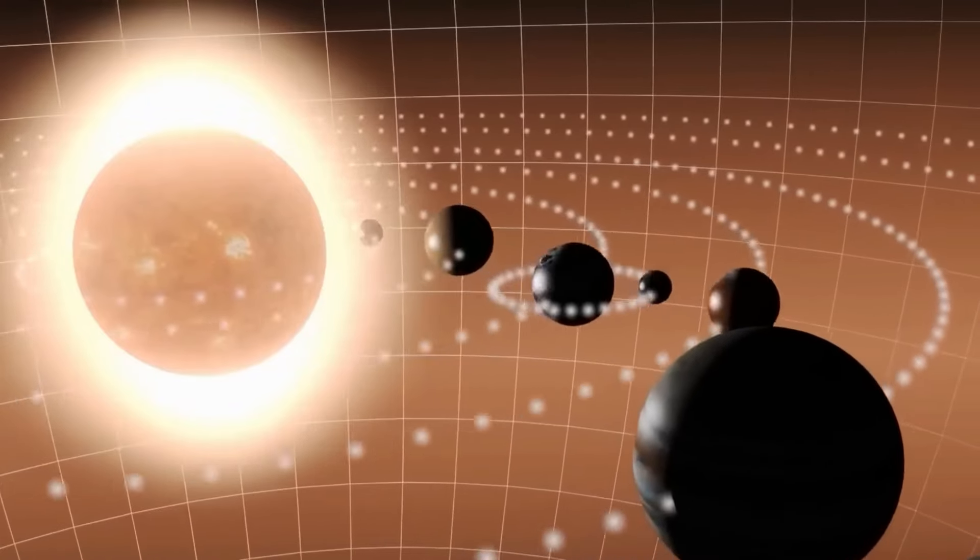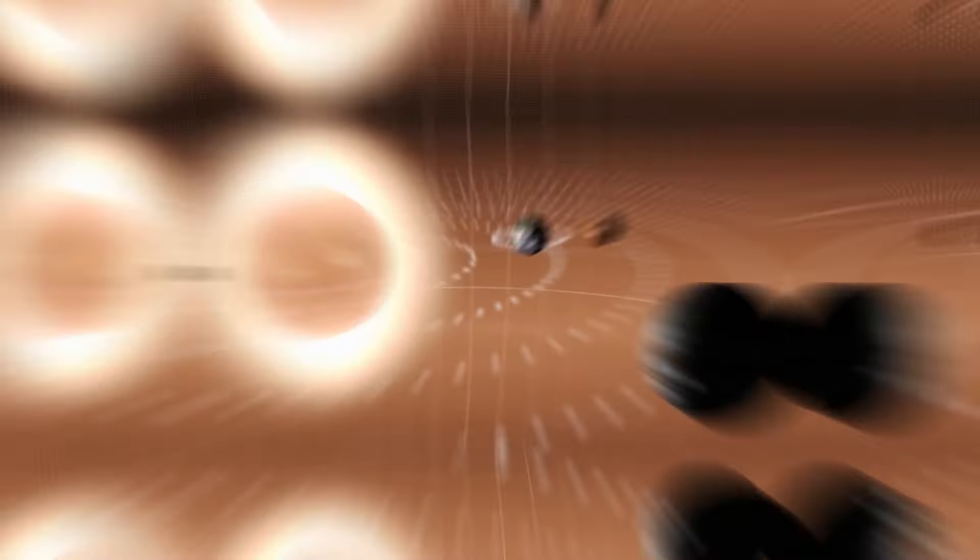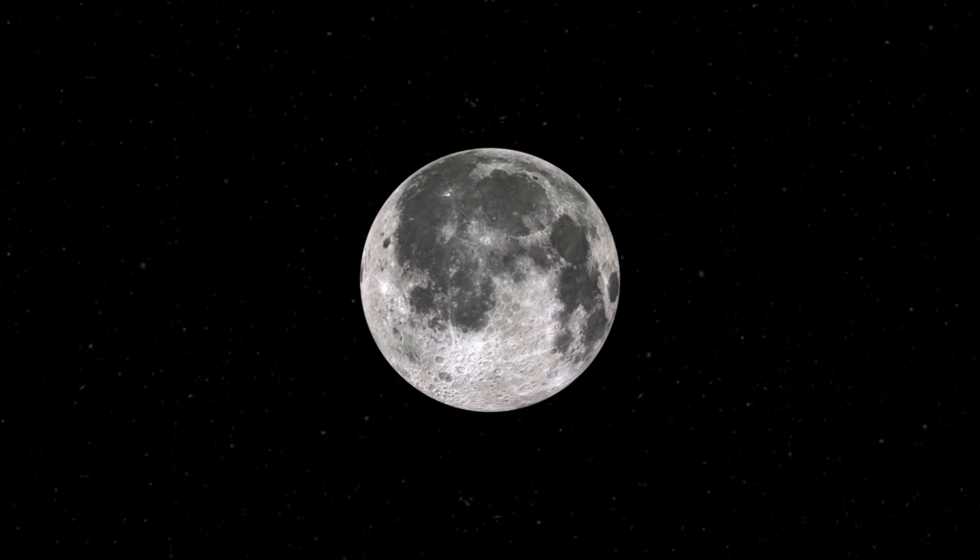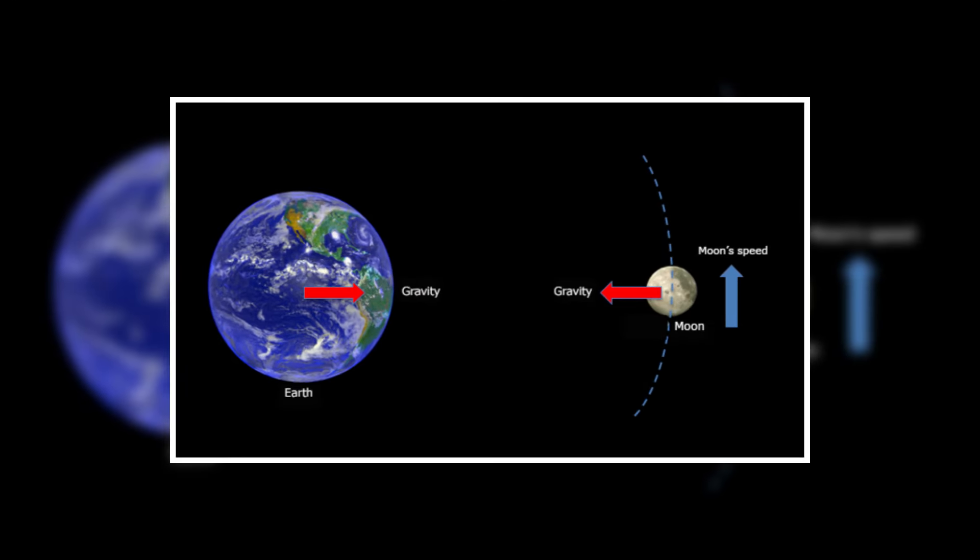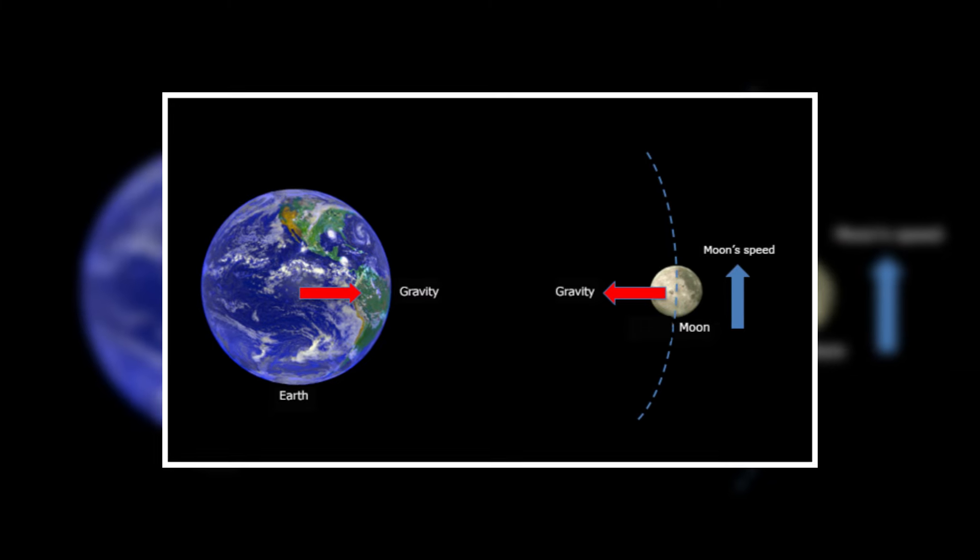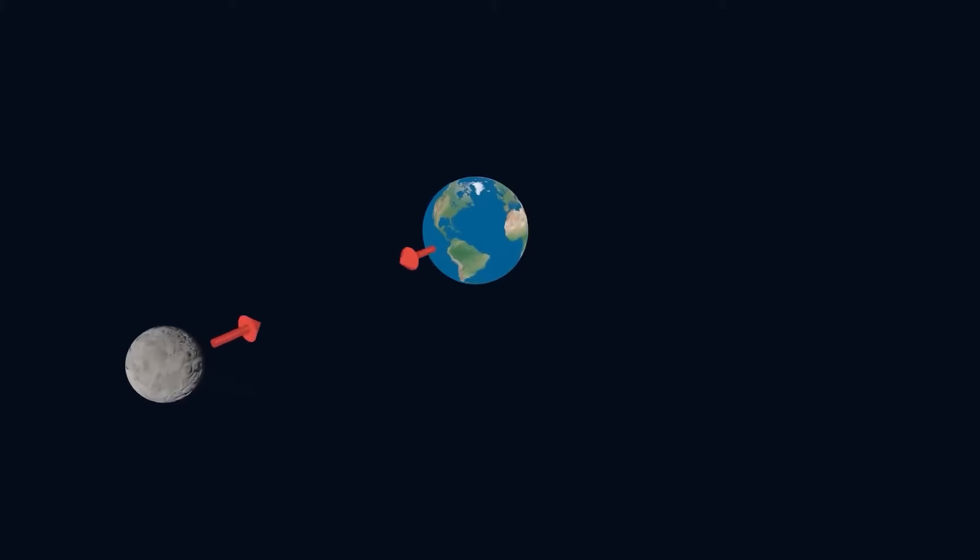He was also able to advance Kepler's elliptical orbit theory as a result of the discovery. The Moon, which is the closest celestial body to Earth, is only able to travel alongside the planet because of a straight-line tangent that crosses the Earth's center and holds the Moon in place beneath the planet's gravitational pull.